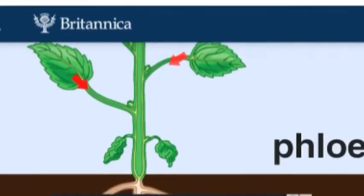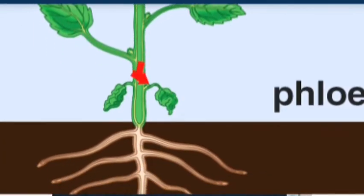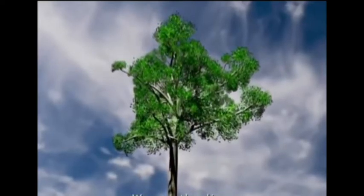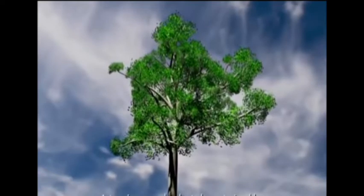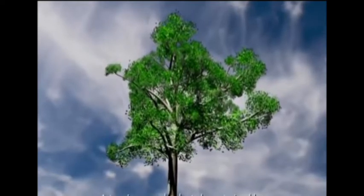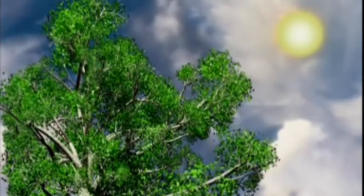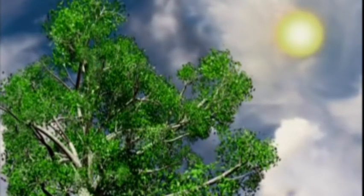Secondly, the food made in the leaf is to be transported to different parts of the plant because plant parts need food to release energy, to grow, and to do various other activities.